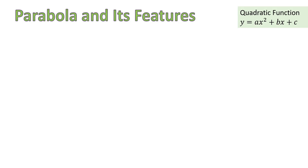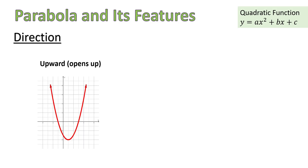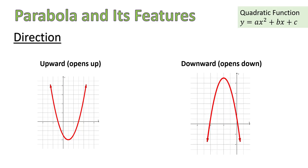So let's talk about important features of parabola. The first one is its direction. The graph of a quadratic function can be either an upward parabola — we say that it opens up — or it can be a downward parabola, in which case we say that it opens down. I'm sure you can see the difference between those two. Now in which case does a parabola open up, and in which case does it open down?